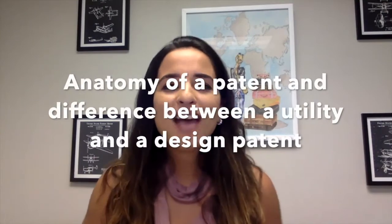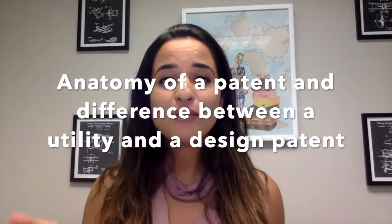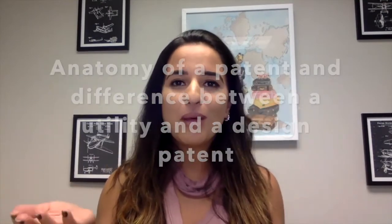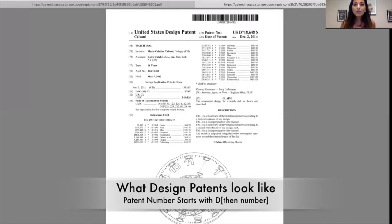Now let's look at the anatomy of the patent and look at the difference of what the two of them look like. So when looking at a patent, how do you know if it is a design or utility patent? Let's look at the anatomy of a patent.